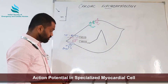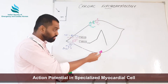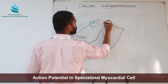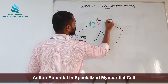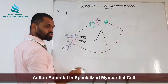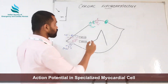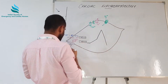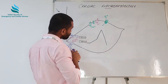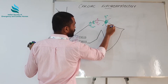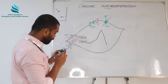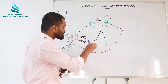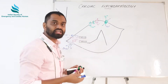After the action potential, the sodium-potassium ATPases and the calcium-sodium exchangers are active. Calcium will go out through the calcium-sodium exchangers in exchange for sodium coming into the cell, and this sodium will be taken out by the sodium-potassium ATPase pump. All the electrolyte changes that have taken place will be reversed, and the cell is set for another cycle of action potential.